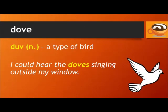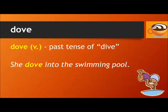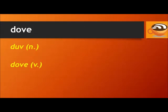Next, we have 'dove' and 'dove.' A dove is a type of bird. For example: I could hear the doves singing outside my window. 'Dove' is also a verb, meaning the past tense of dive. For example: she dove into the swimming pool. Dove. Dove.